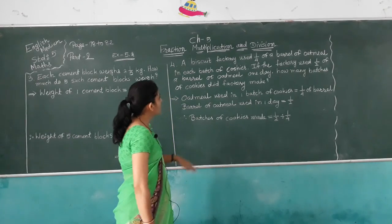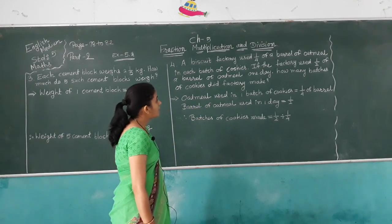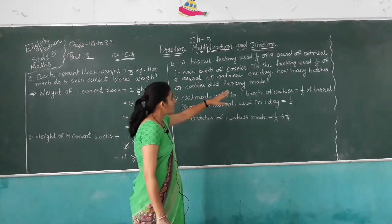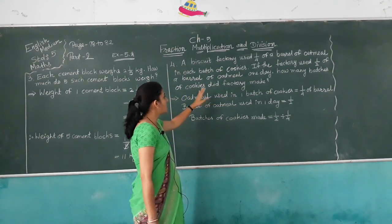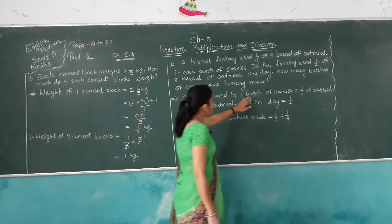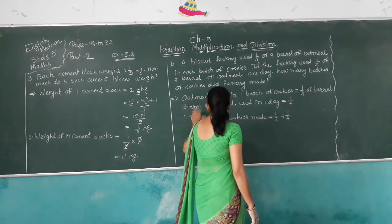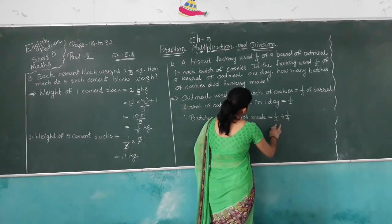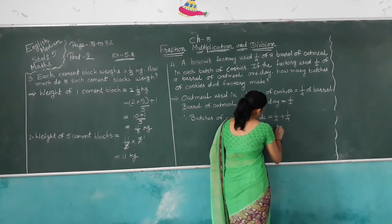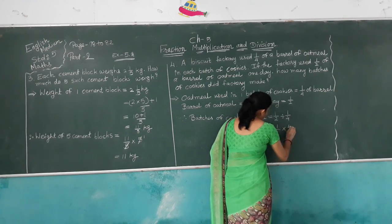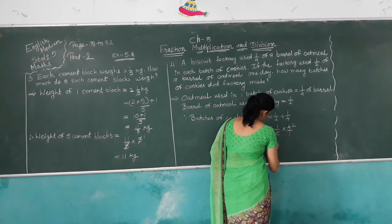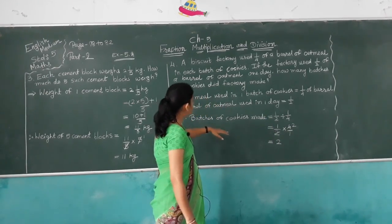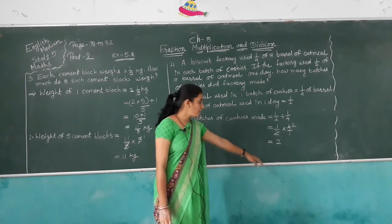Next: a biscuit factory uses 1/4 of a barrel of oatmeal per batch of cookies. If the factory used 1/2 a barrel one day, how many batches did they make? Batches made = 1/2 divided by 1/4. Using the reciprocal method, multiply by 4/1: 2 goes into 4 giving 2, so 2 batches of cookies were made.